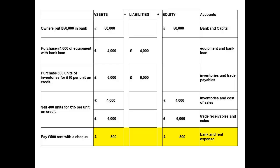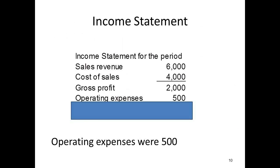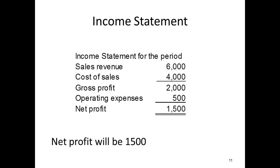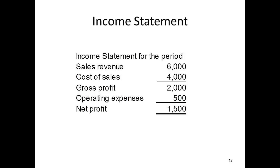The next step is to see what our operating expenses were. We recorded one transaction that was an operating expense — this was the payment of £500 for the rent. My next step is to enter the operating expenses to the income statement. I subtract this from gross profit to give a figure of £1,500 for the net profit, which gives me my completed income statement.